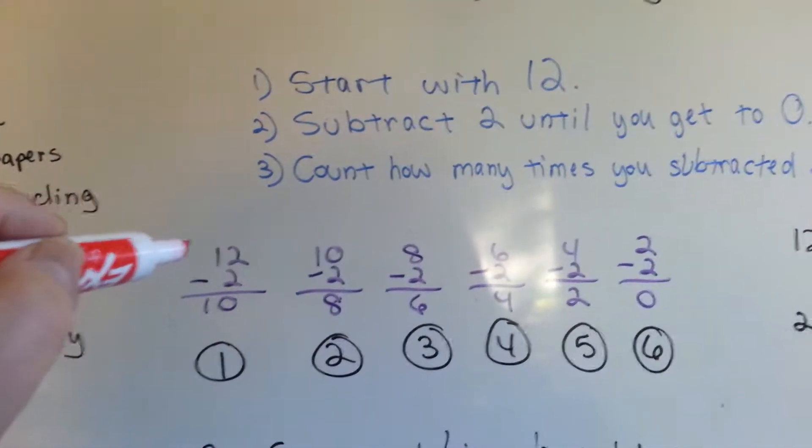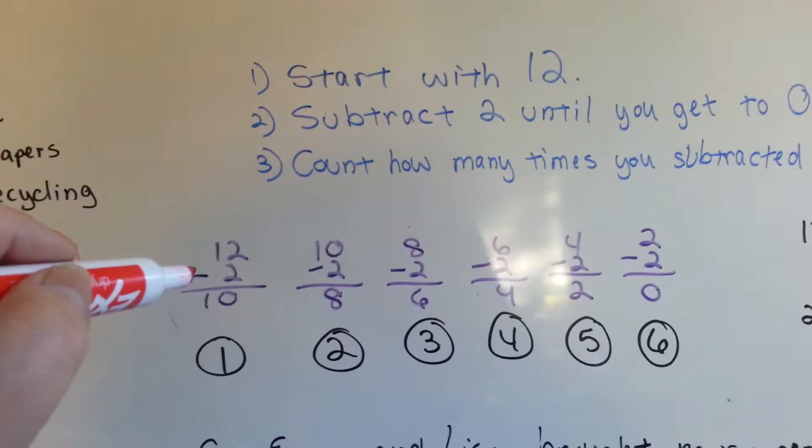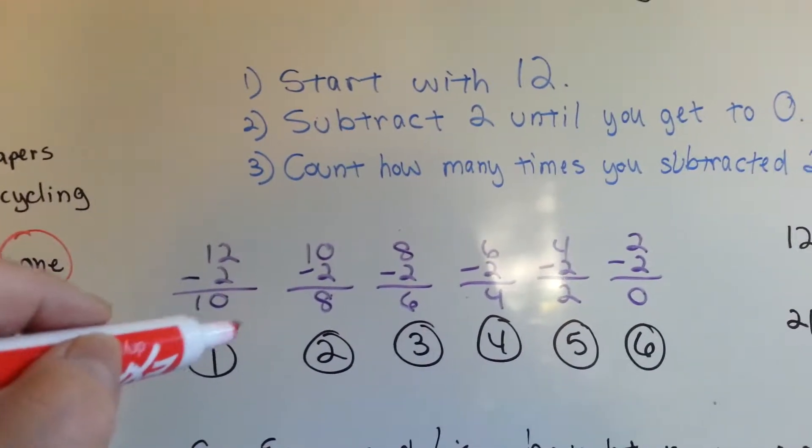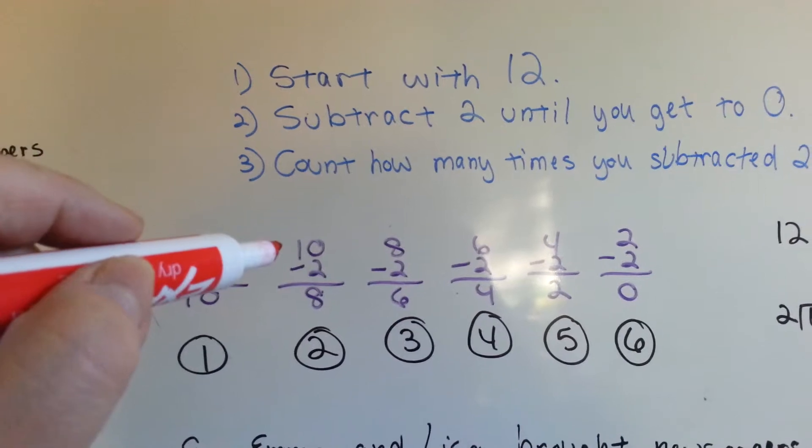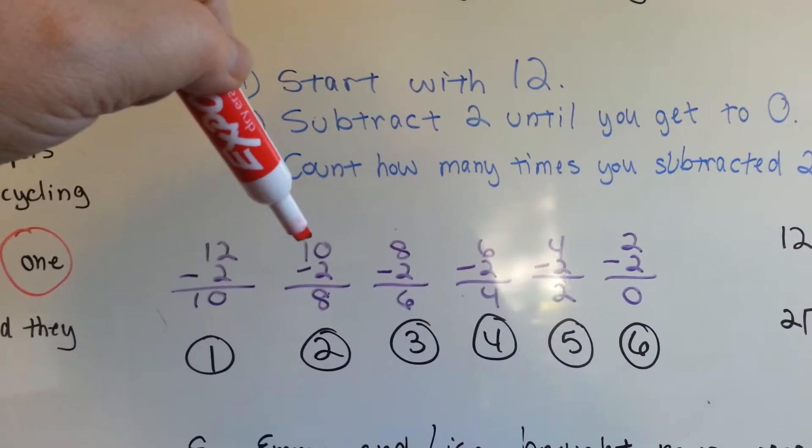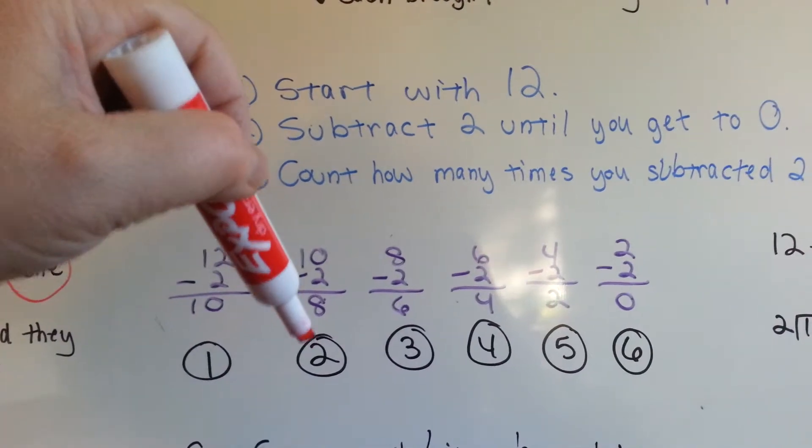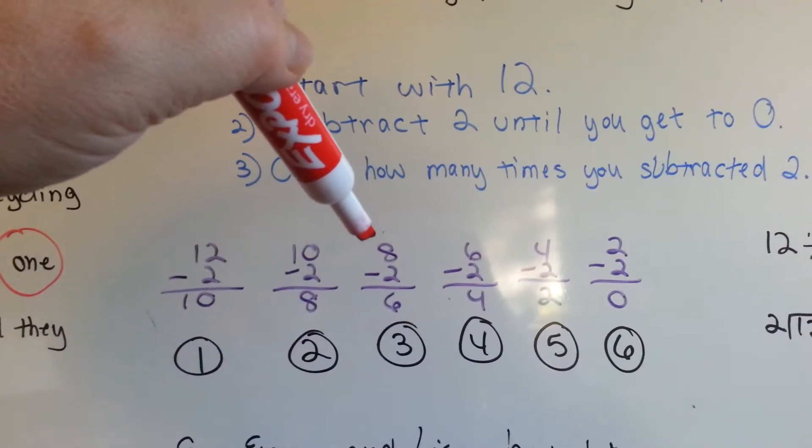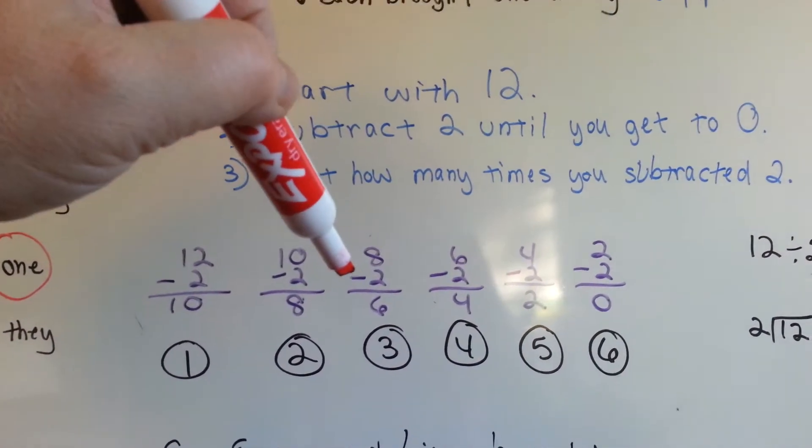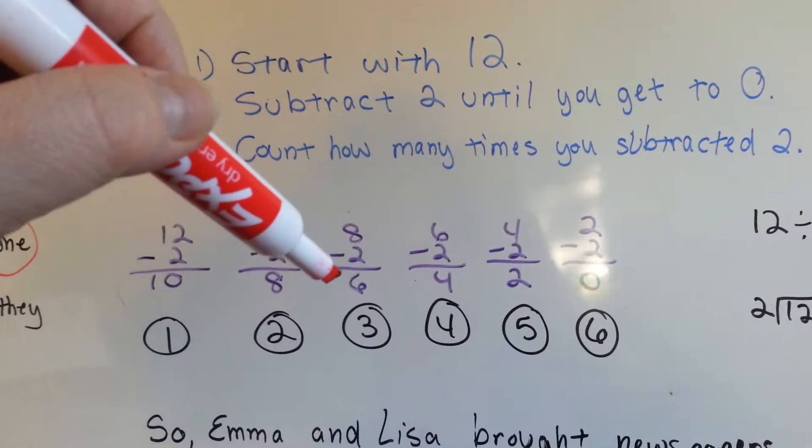So we start with 12, and we take away the two newspapers they brought, let's say, on Monday. That's the first time. Then on Tuesday, they had ten newspapers left, and we took away two and got eight. On Wednesday, there was the eight newspapers, they brought two, and then there was six newspapers.